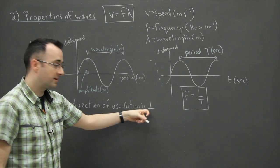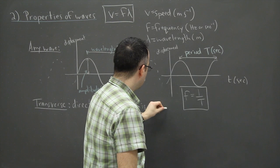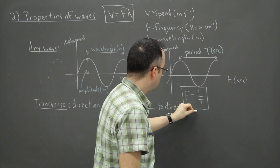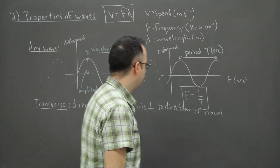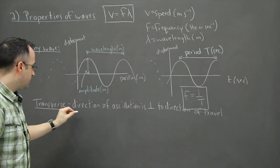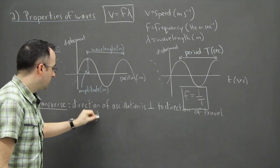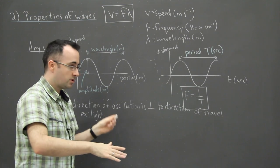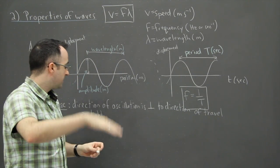It's perpendicular to the direction of travel. What I mean is the direction of oscillation, because a wave will be something oscillating up and down or back and forth. If it's a transverse wave, it means the direction it oscillates is 90 degrees to the direction it travels.